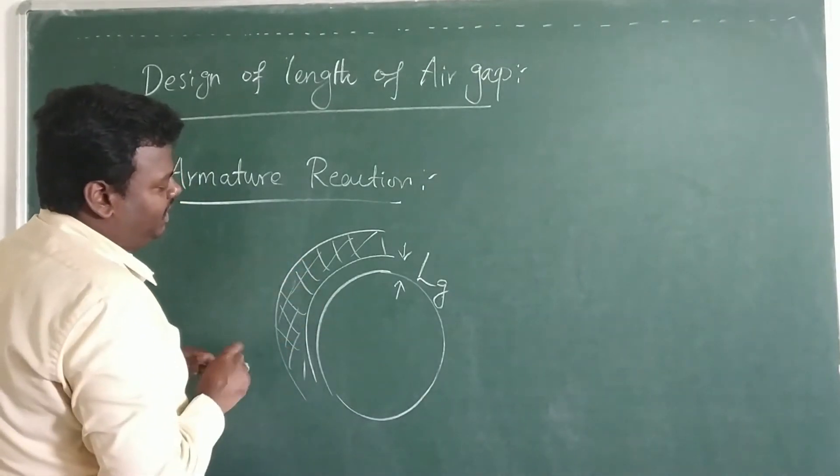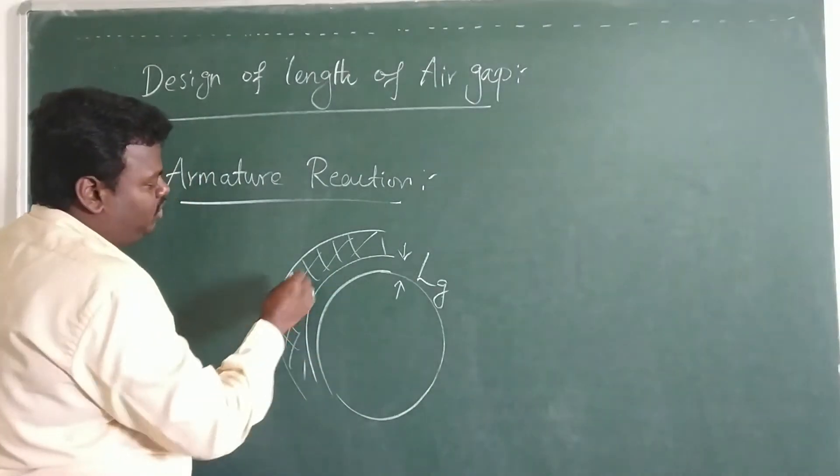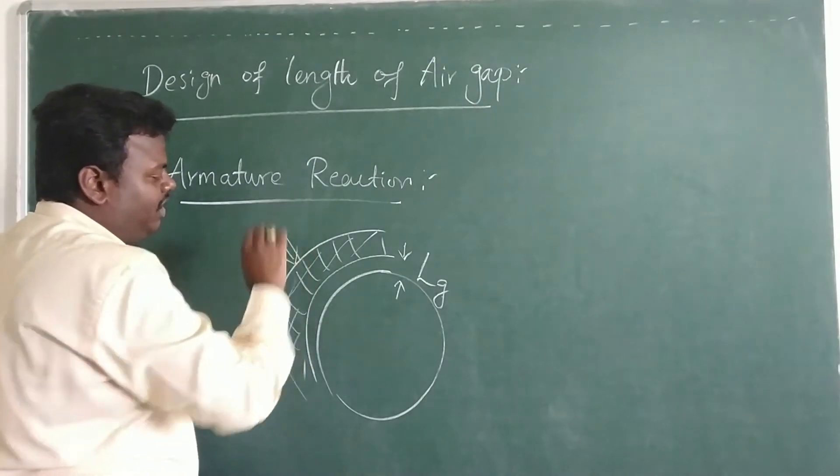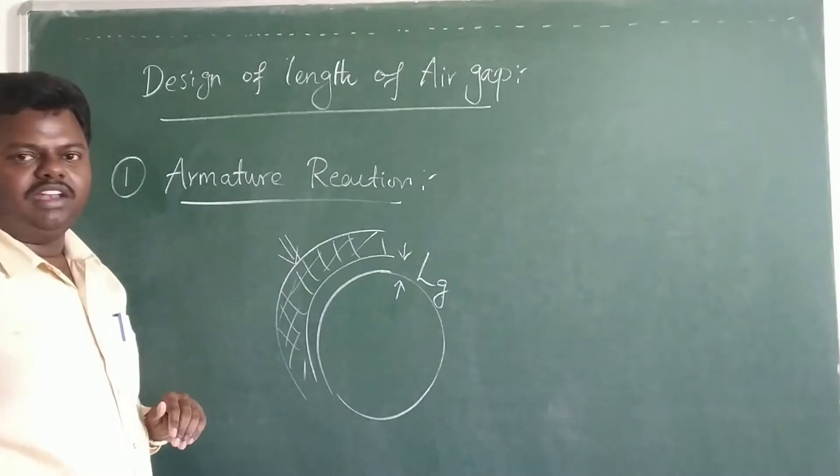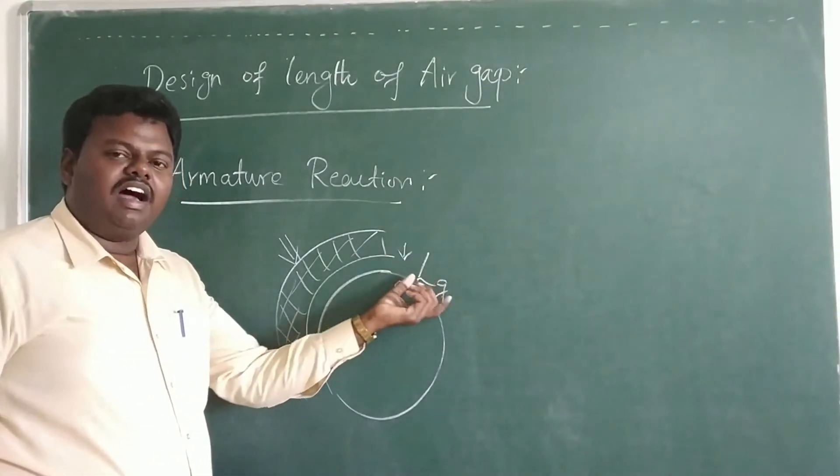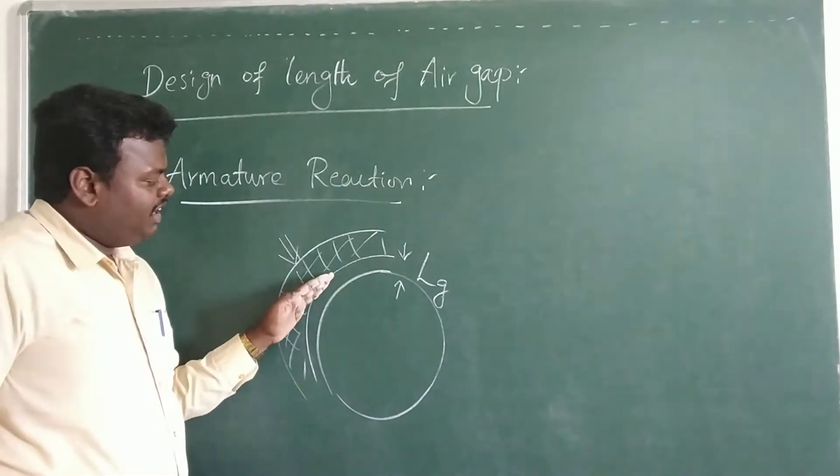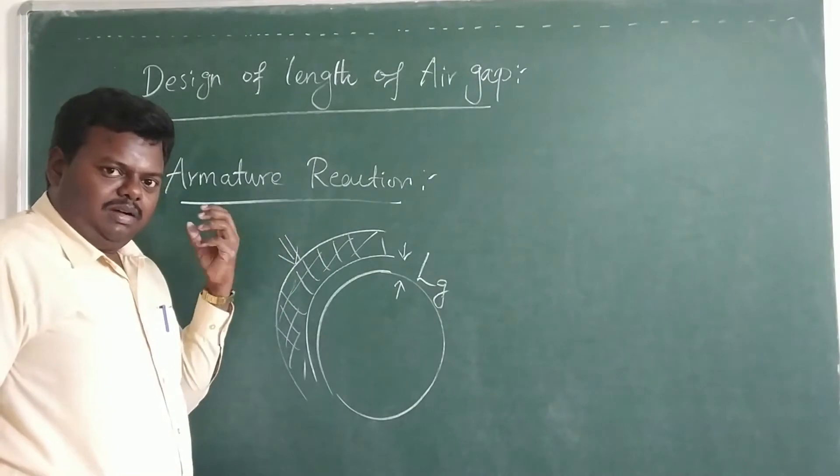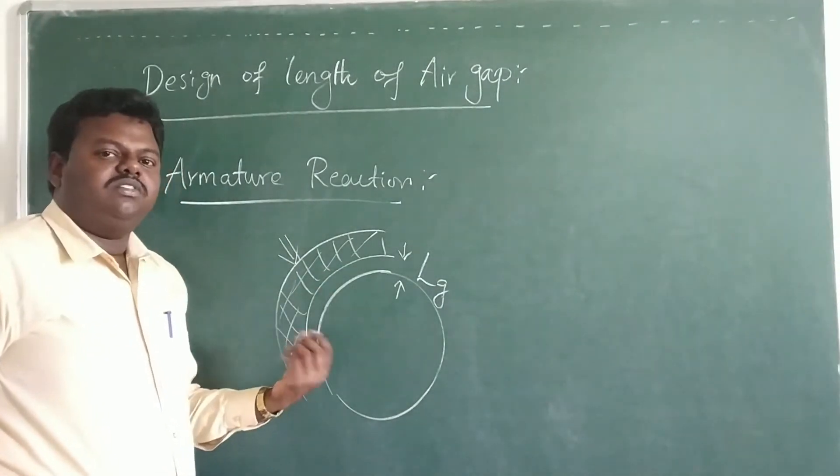And one more important thing is, if we are keeping the air gap length further large, we have to increase the amount of the flux produced in that main length. So that is the case, whenever we have the large air gap, the field has to be increased further. So the meaning is, in this point of moment, armature reaction can be reduced further.